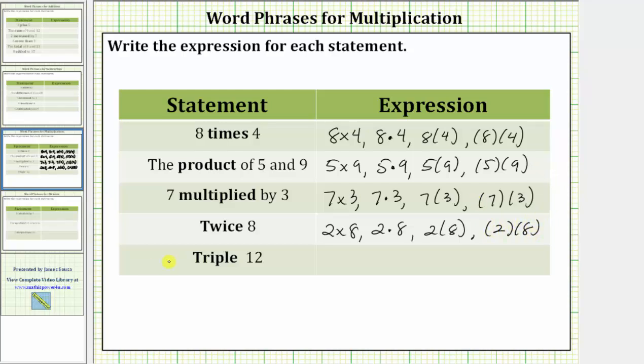The last statement, we have triple 12. To get triple an amount, we would have three times the amount. And therefore, triple 12 is three times 12.